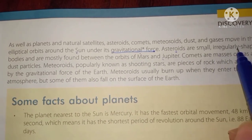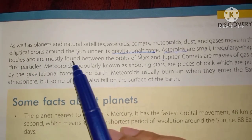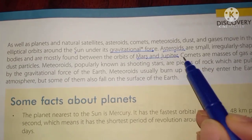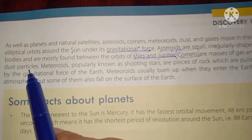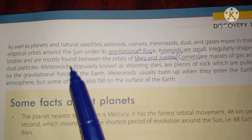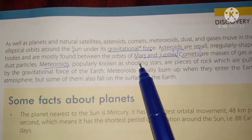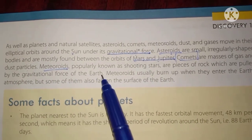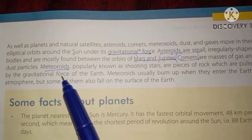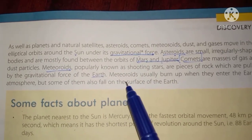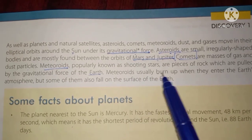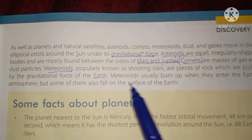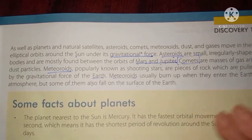Asteroids are smaller, irregularly shaped bodies mostly found between the orbits of Mars and Jupiter. Comets are masses of gas and dust particles present in space. Meteoroids, popularly known as shooting stars, are pieces of rock pulled by the gravitational force of the earth. Meteoroids usually burn up when they enter the earth's atmosphere, but some fall on the surface of the earth.